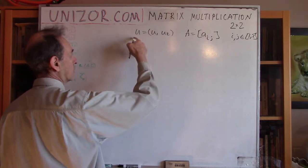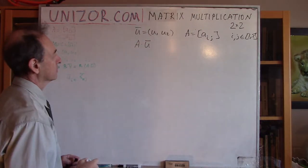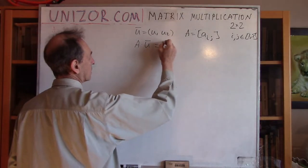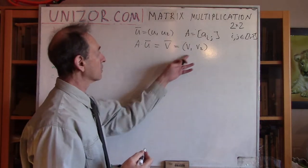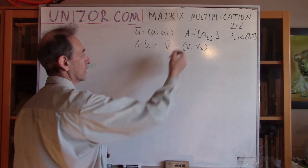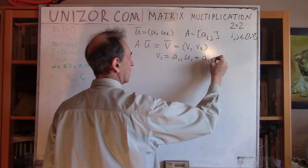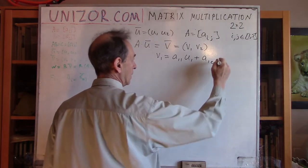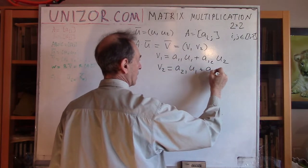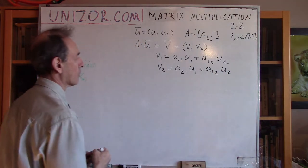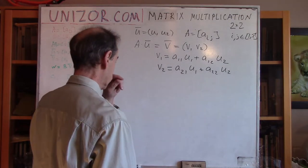We apply matrix A to vector U, multiplying on the left, and we get the vector V. The coordinates of vector V are expressed in terms of U and matrix A — this is something we have already done many times. That's how the coordinates of vector U are related to the coordinates of vector V using the linear transformation described by matrix A.